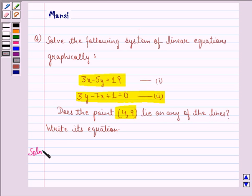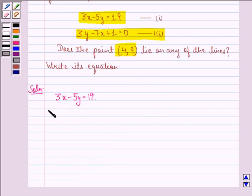Let us start with the solution to this question. Equation of the first line is 3x minus 5y equals to 19. This implies 5y is equal to 3x minus 19 and this implies that y is equal to 3x minus 19 divided by 5.